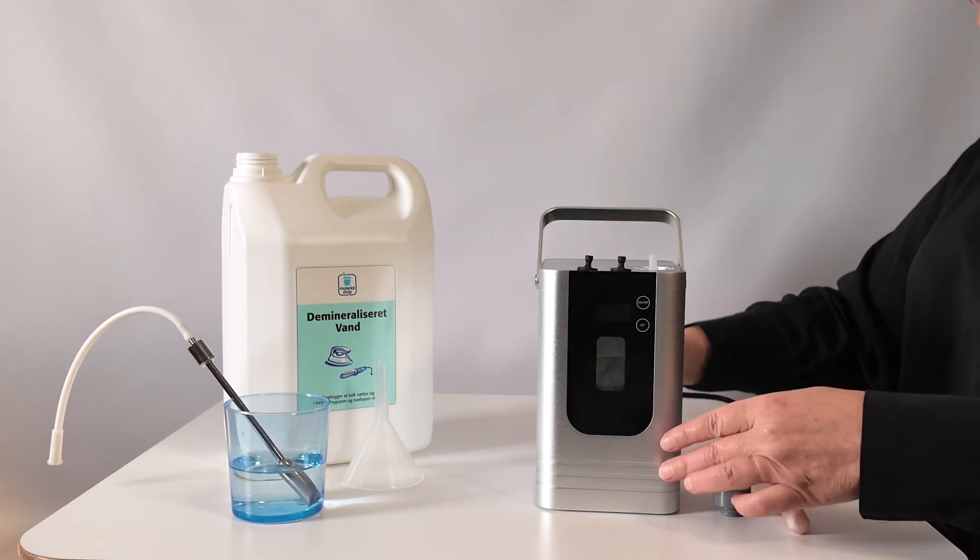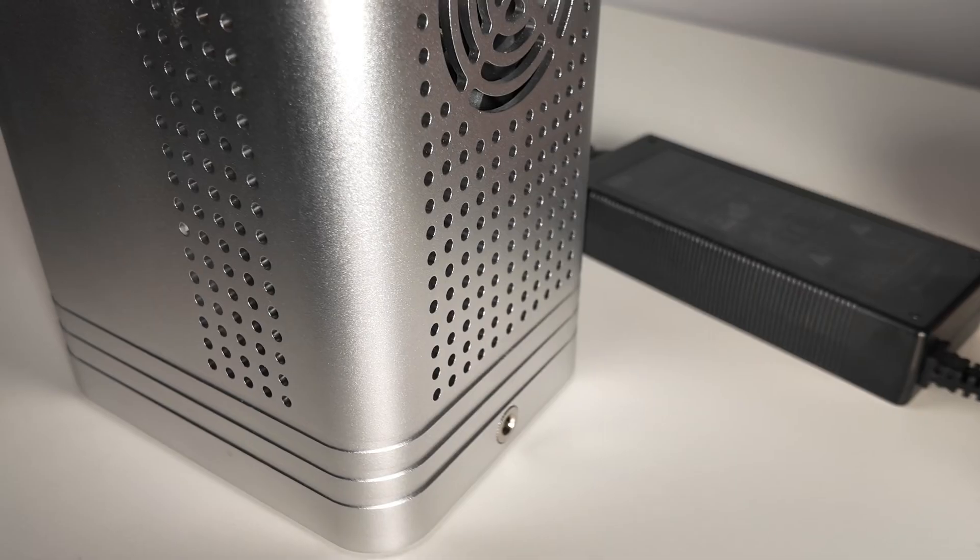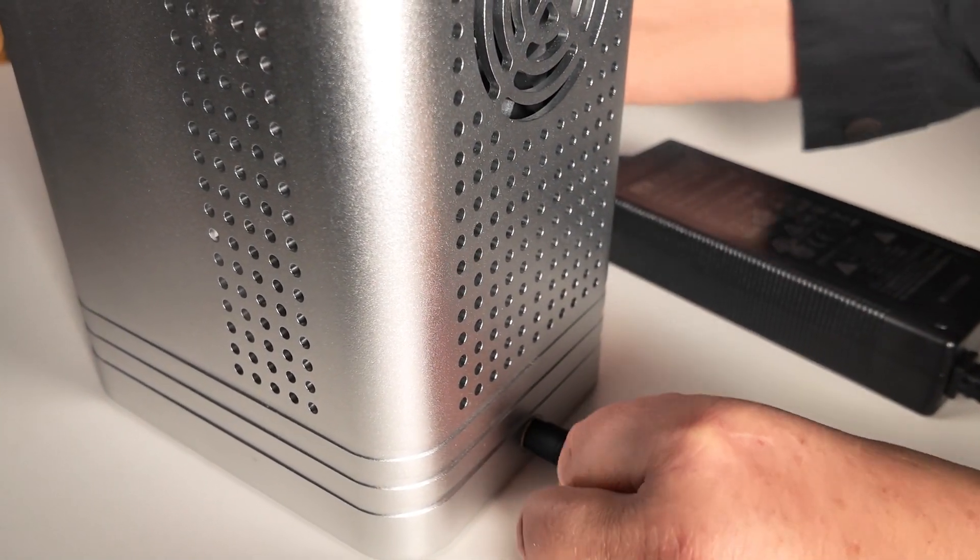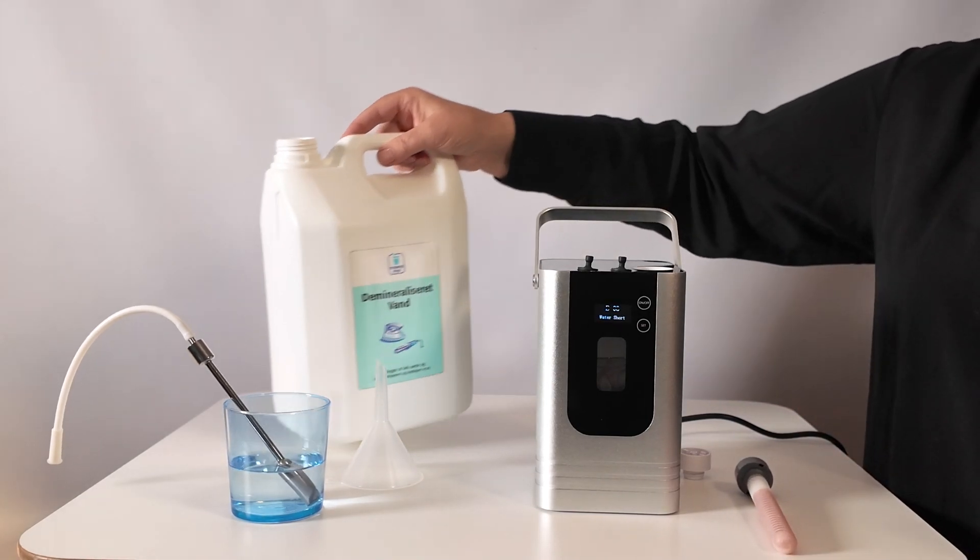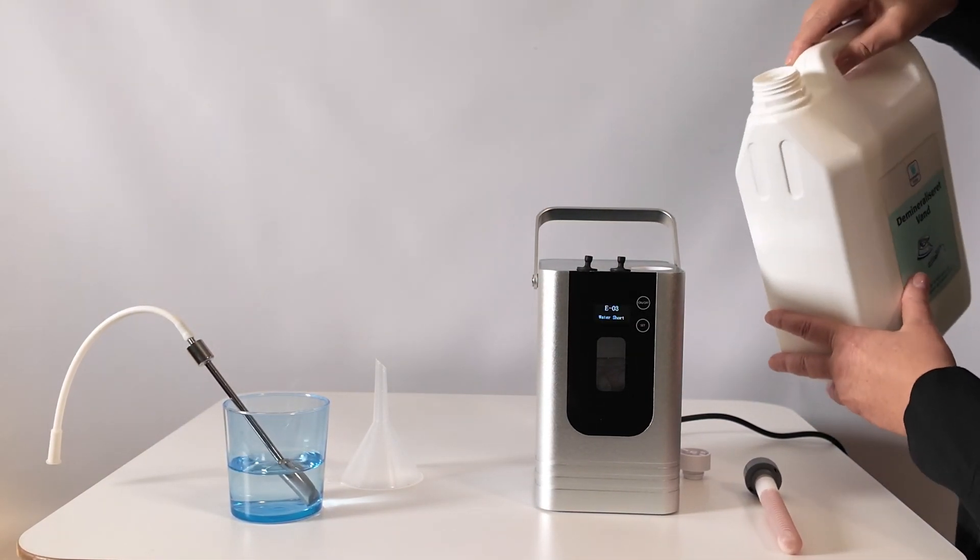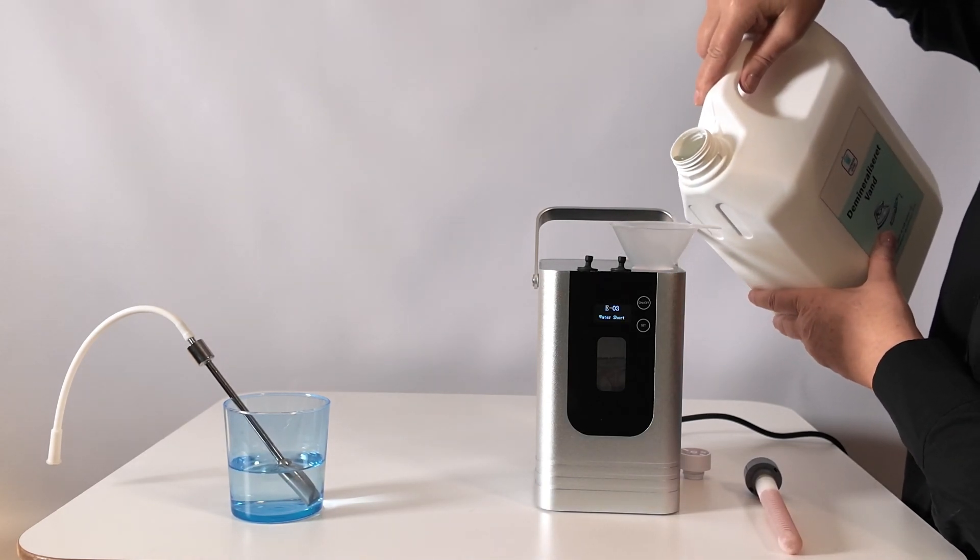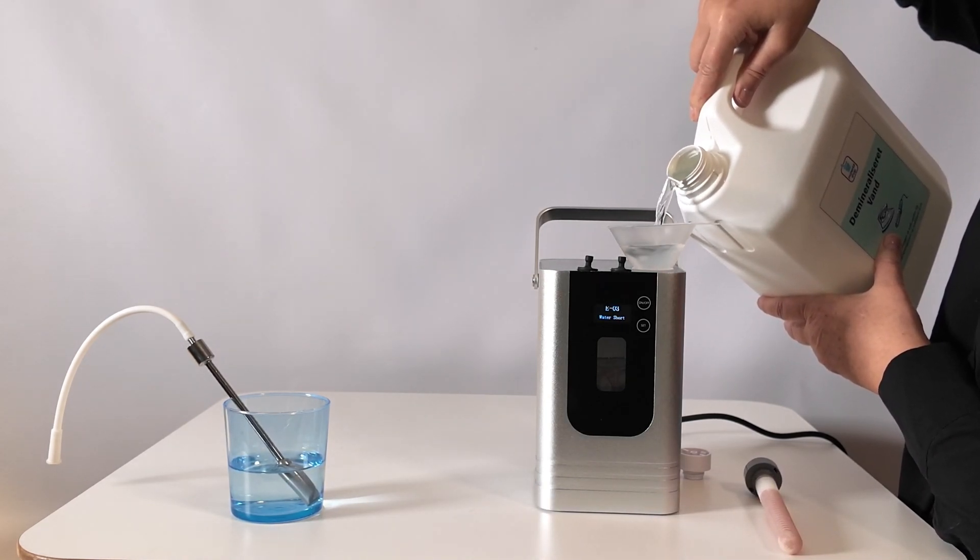This is a manual for using the H2 Pure Traveler. You have to connect the electricity on the back and fill in demineralized water. It's about half a liter you have to use, but you can see it on the front screen.